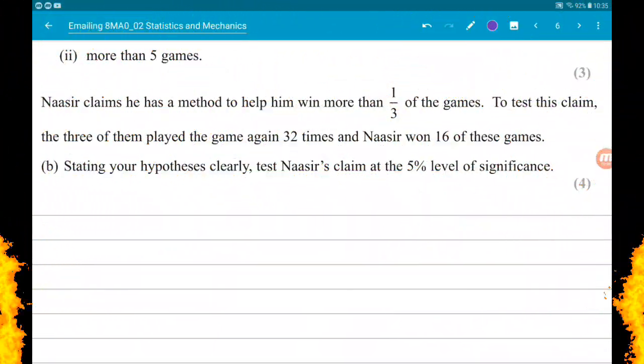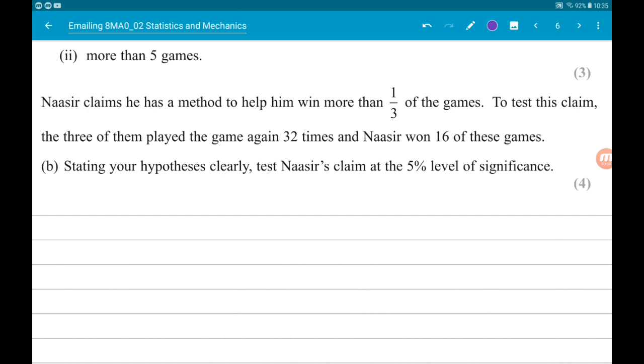For part B, Nasir claims he has a method to help him win more than one third of the time. To test his claim, the three of them played the game again 32 times and Nasir won 16 of these games. Stating your hypothesis clearly, test Nasir's claim at the 5% level of significance.